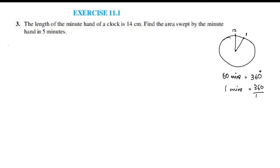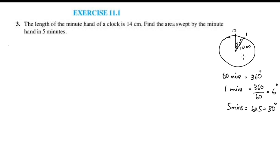360 degrees divided by 60 minutes equals 6 degrees per minute. So 6 into 5 is 30 degrees — the angle is 30 degrees. This is the area we have to find. The length is 14 cm, that is the radius. This is a sector problem: theta by 360 into pi r squared.